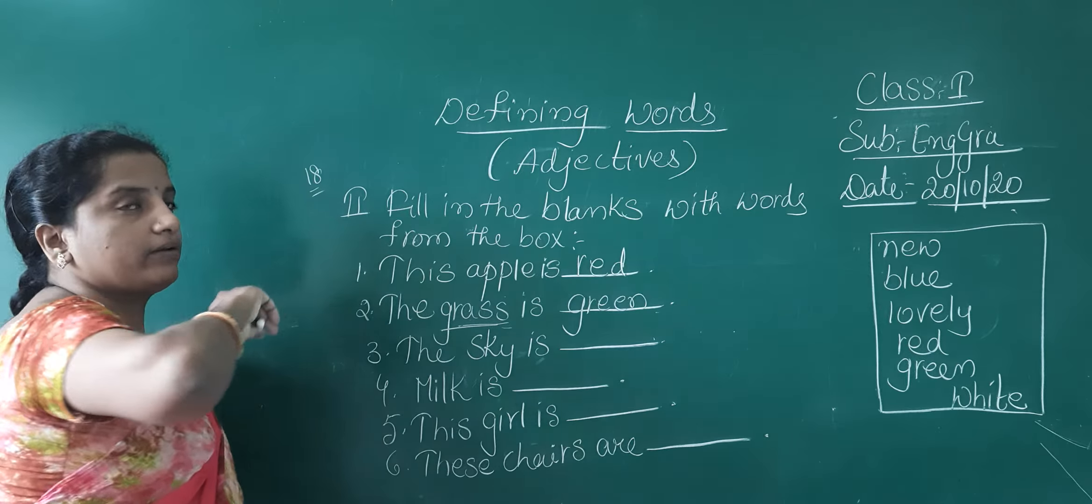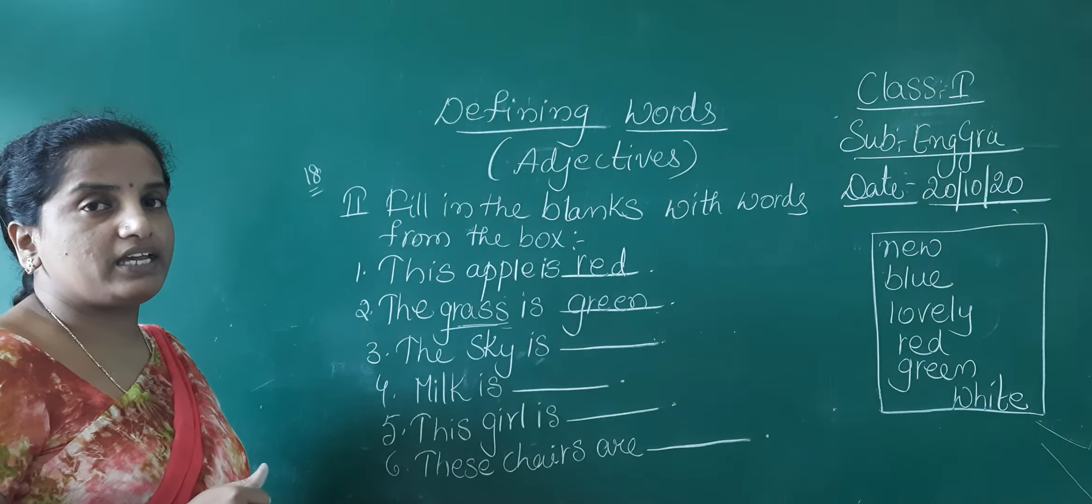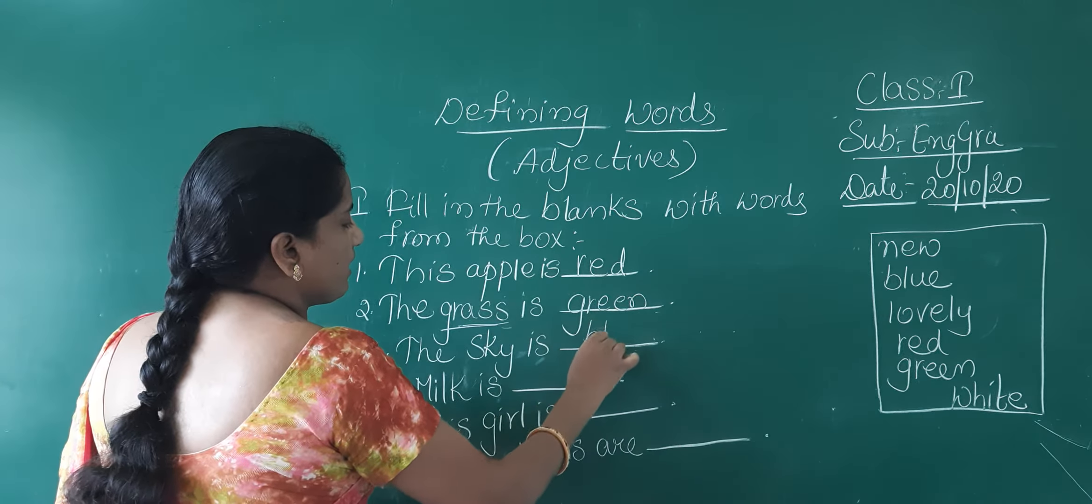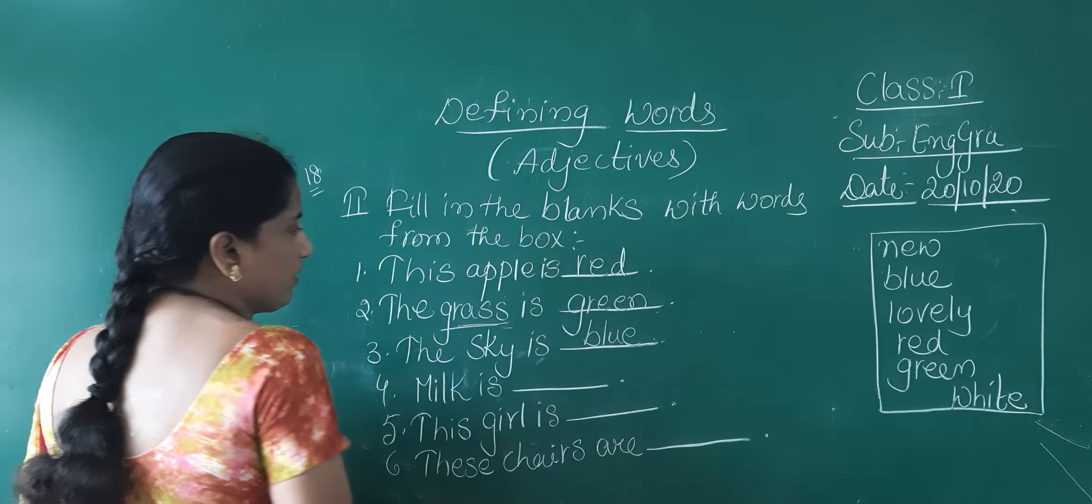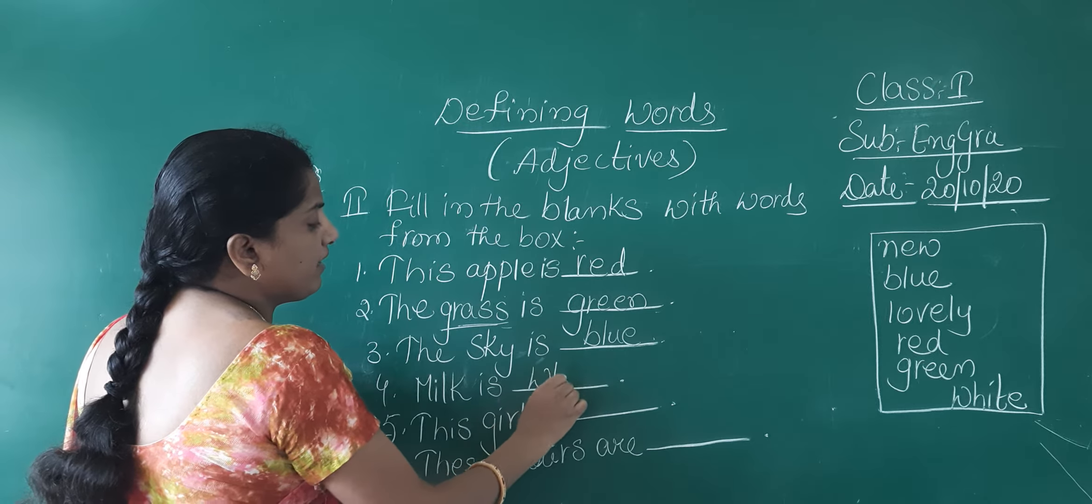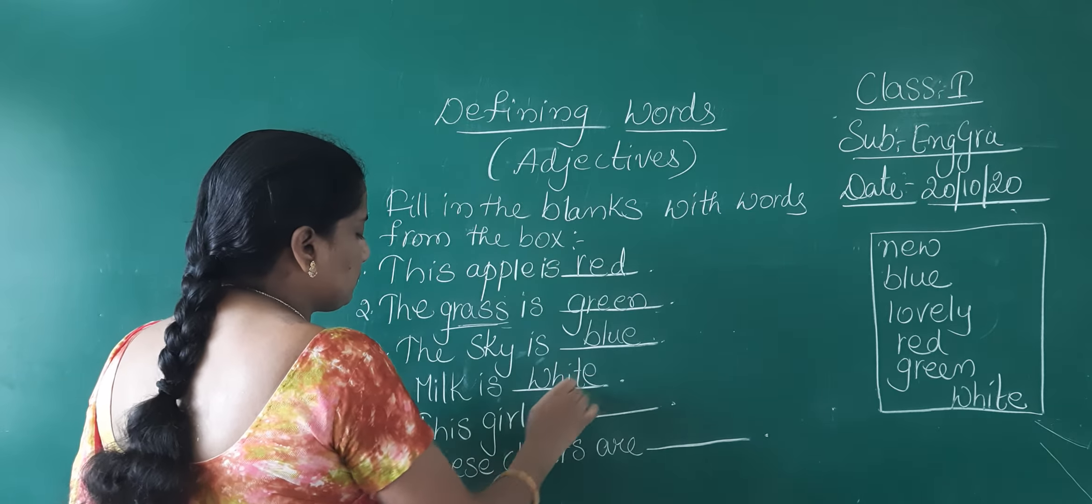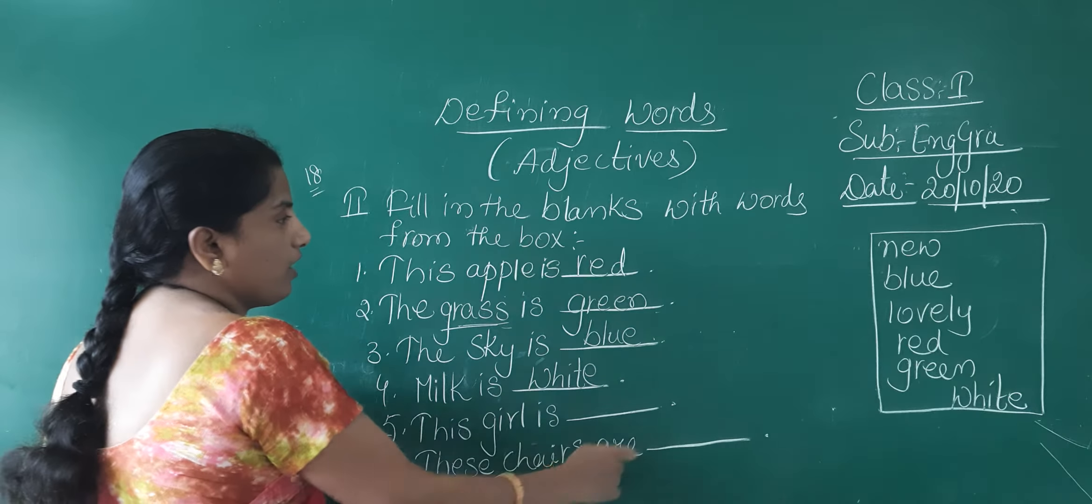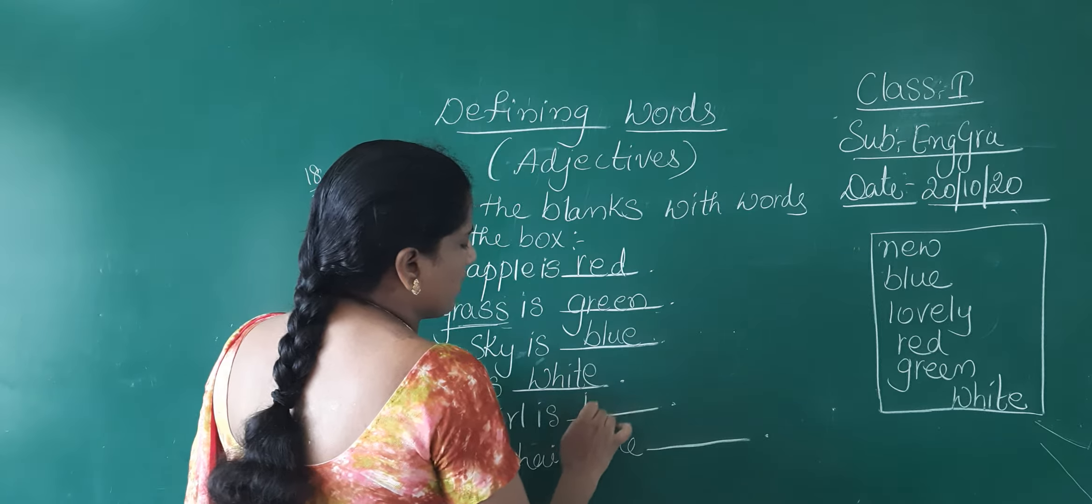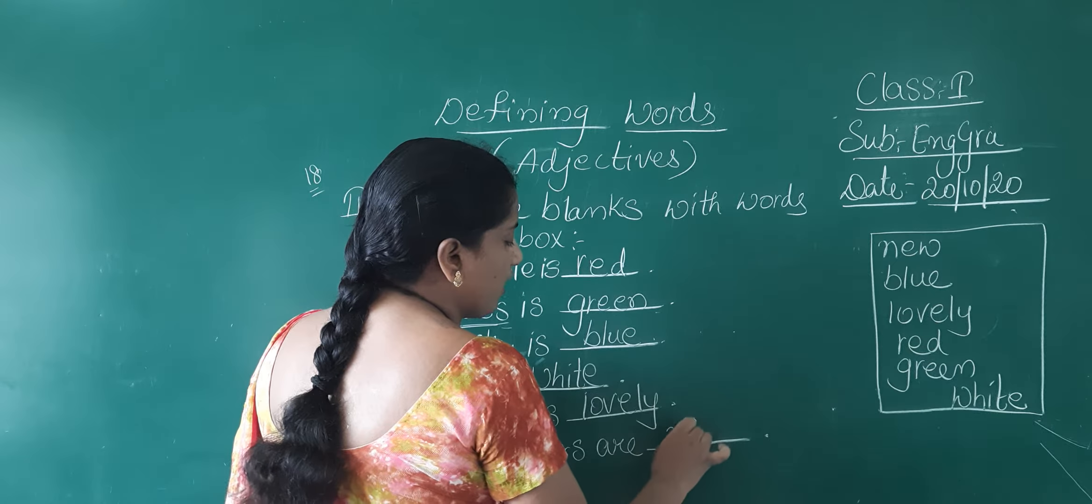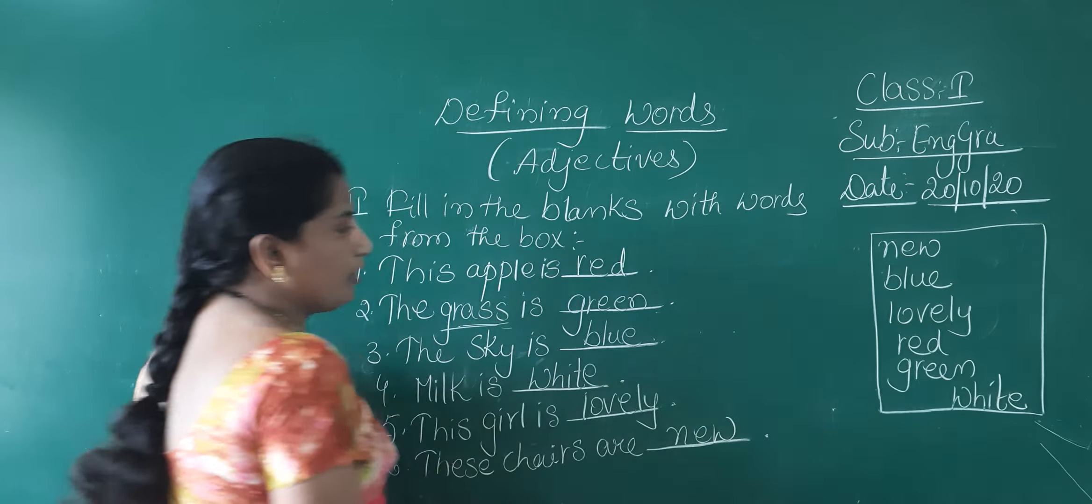And sky, our sky is in which color children? Blue. Our sky is in blue color. Milk, you all know, milk is in white color. This girl is lovely. And the chairs are new.